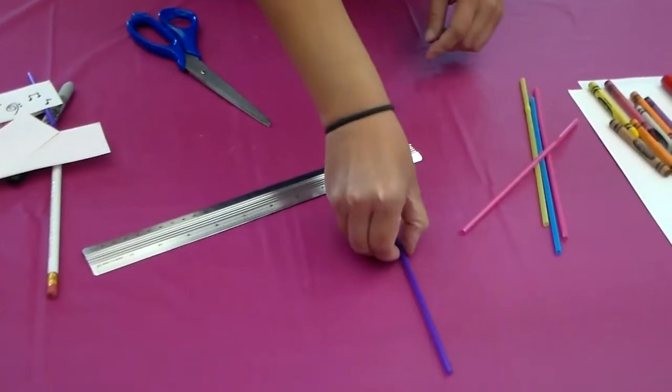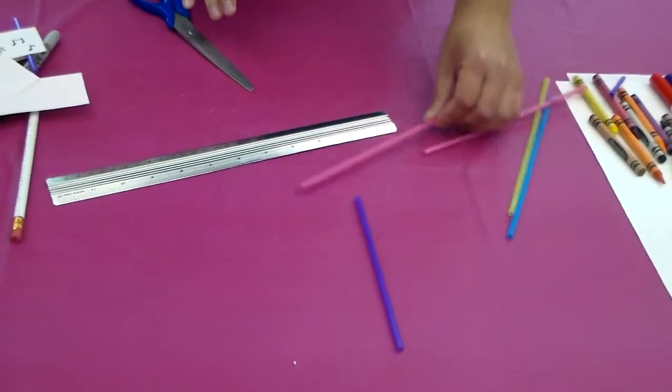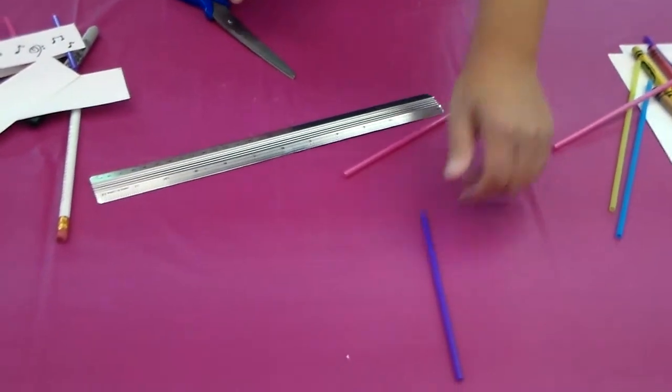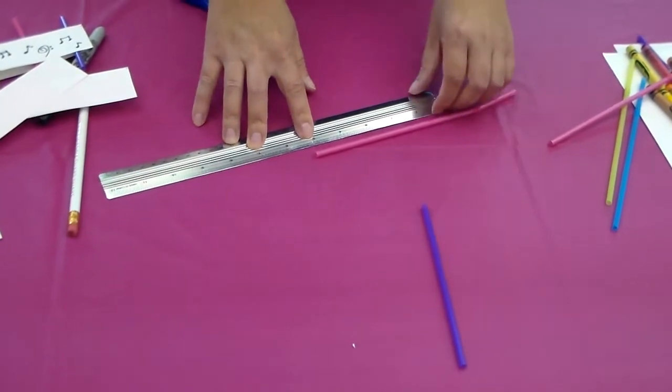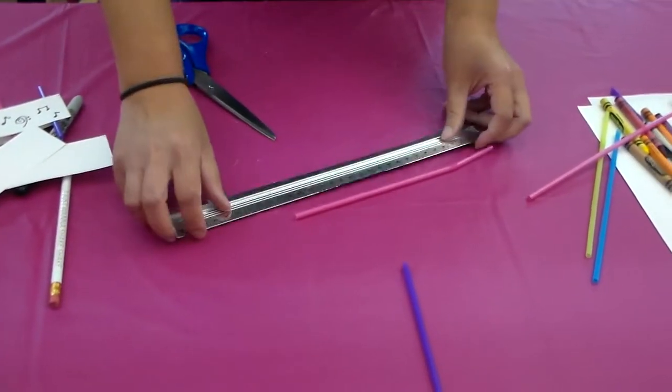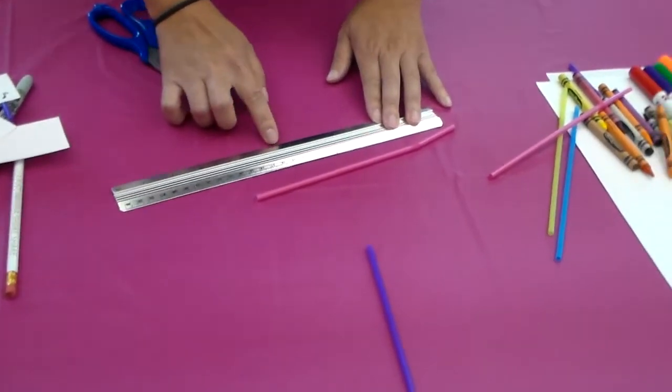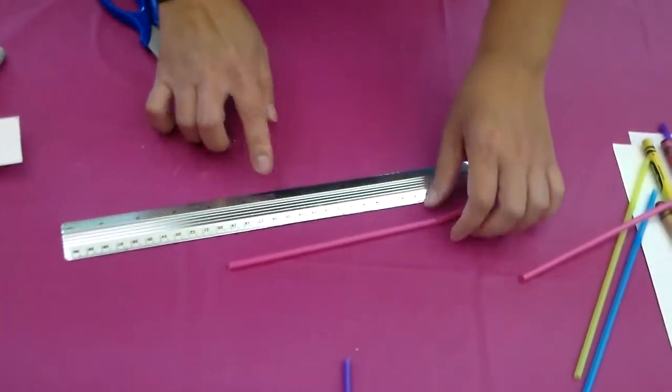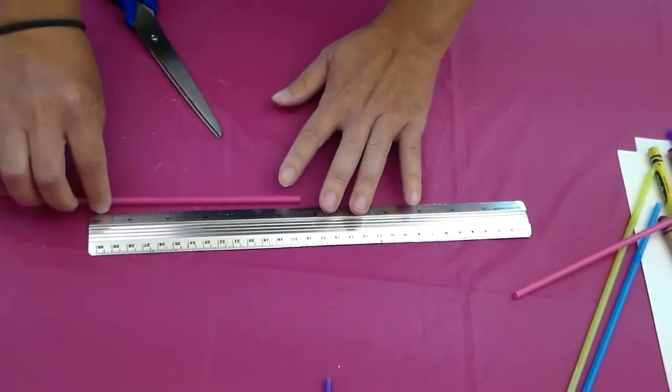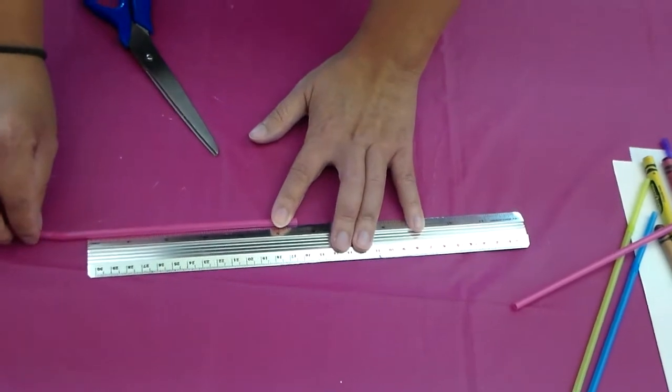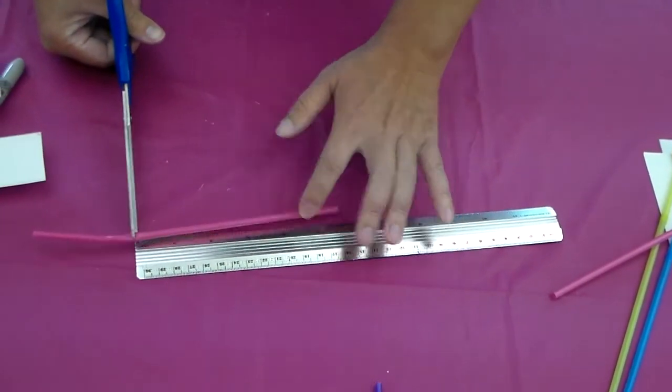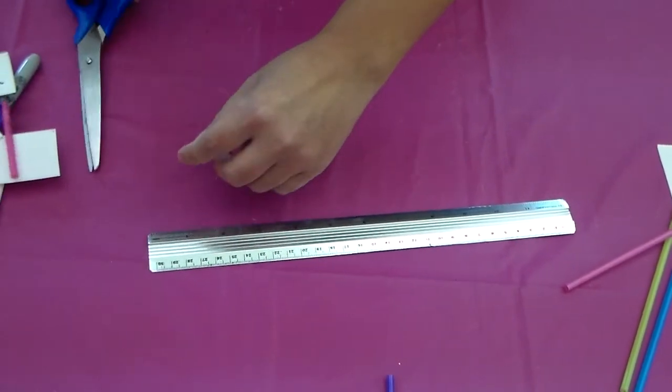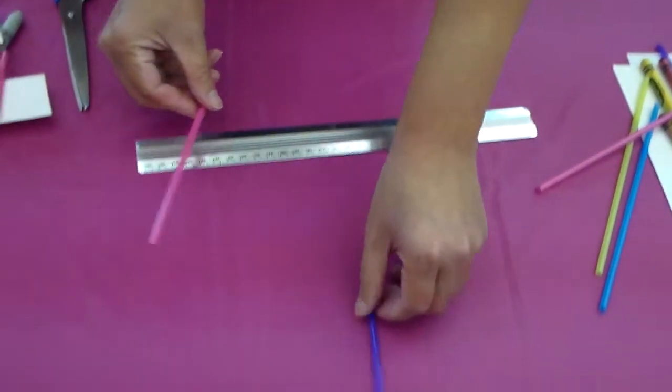Okay your first straw is done and the second straw you want to put five point five inches. See so five point five inches here so you can see five point five is between five and six. So I want to measure it five point five inches and then you cut it like that.